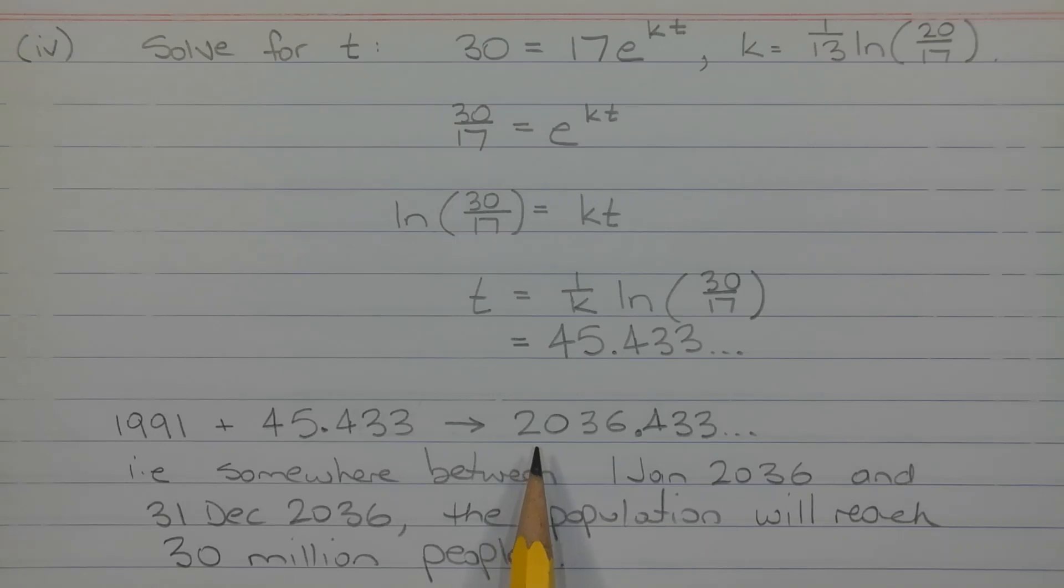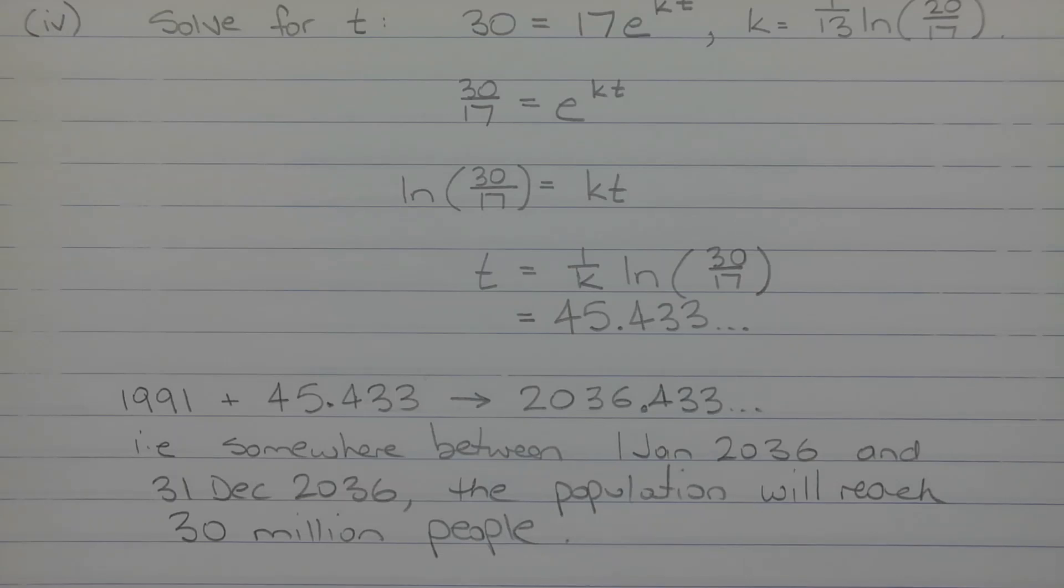we get the year 2036.433. The way we interpret that result is that somewhere between 1st of January 2036 and 31 December 2036, the population will reach 30 million people.